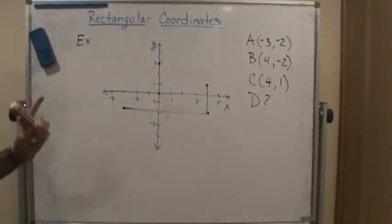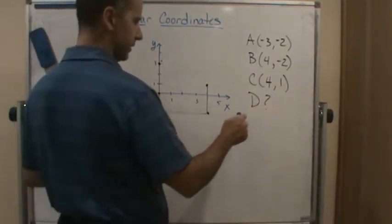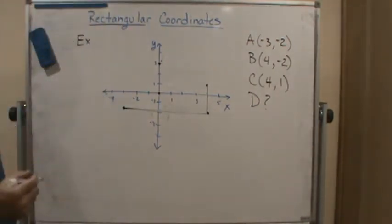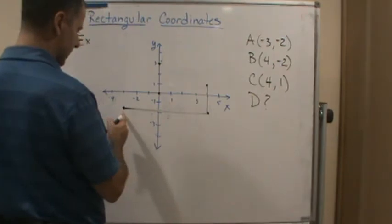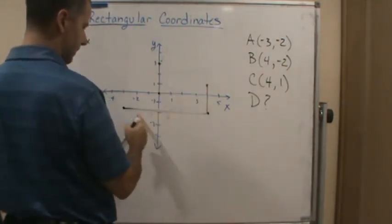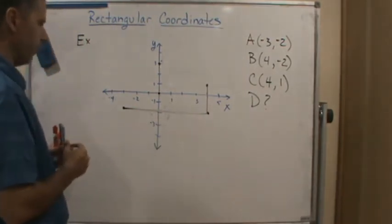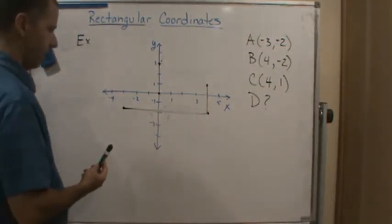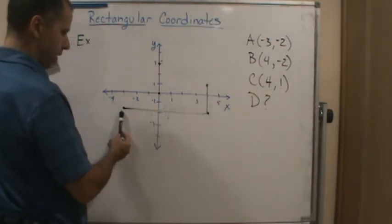We want to find the fourth vertex D. Well, what do we know about rectangles? We know the distance here is going to be the same as the distance over here, and the distance here is the same as the distance here. So all we have to do is find the coordinates of how we went to get this one.